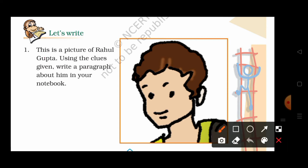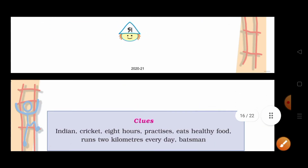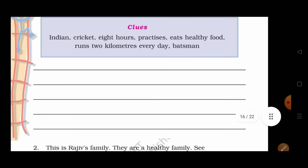This is a picture of Rahul Gupta. Yeh Rahul Gupta ki picture hai. Using the clues given, write a paragraph about him in your notebook. Kuch clues niche diya hoi hai aur aapko unka use kerke paragraph write kerna hai. Aur woh clues hain.